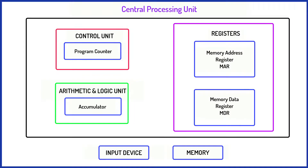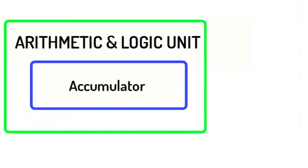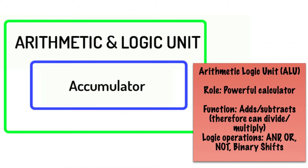Looking at the bottom left-hand side of the diagram, you can see the arithmetic and logic unit. The ALU is fundamentally a really powerful calculator — it's the component that does all the number crunching. It will add, subtract, divide, and multiply. It'll also carry out logical operations such as AND, OR, and NOT functions, as well as binary shifts.